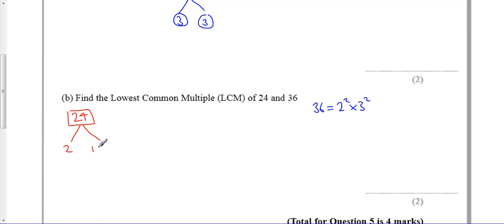2 and 12 it breaks up into. 12 goes into 2 and 6, and 6 goes into... 24 is equal to 2 cubed times 3.